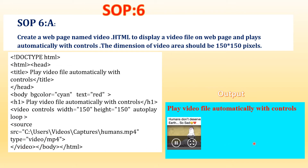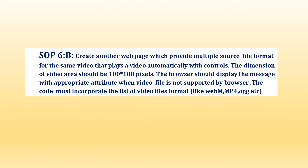You can see the output — the video is there. You can make it full screen, stop it, or use the other controls. SOP 6 Part B: create another web page providing multiple source file formats for the same video that plays automatically with controls. The dimension of the video area should be 100 by 100 pixels. The browser should display a message when the video file is not supported. The code must incorporate a list of video file formats like WebM, MP4, OGG, etc.